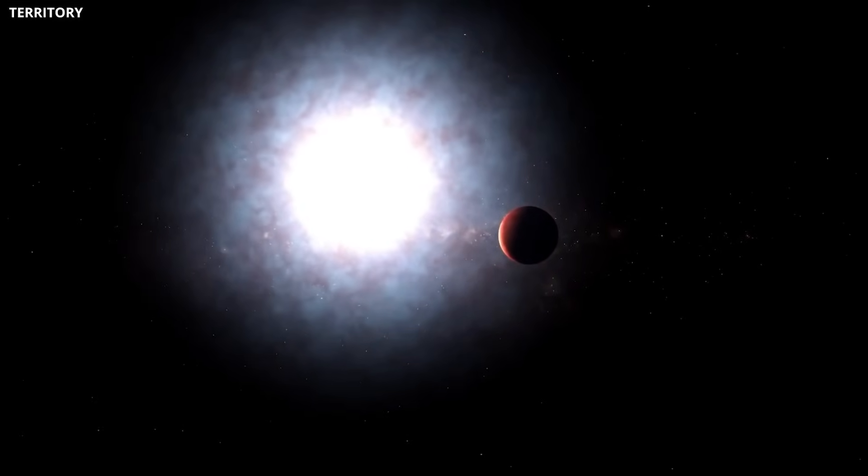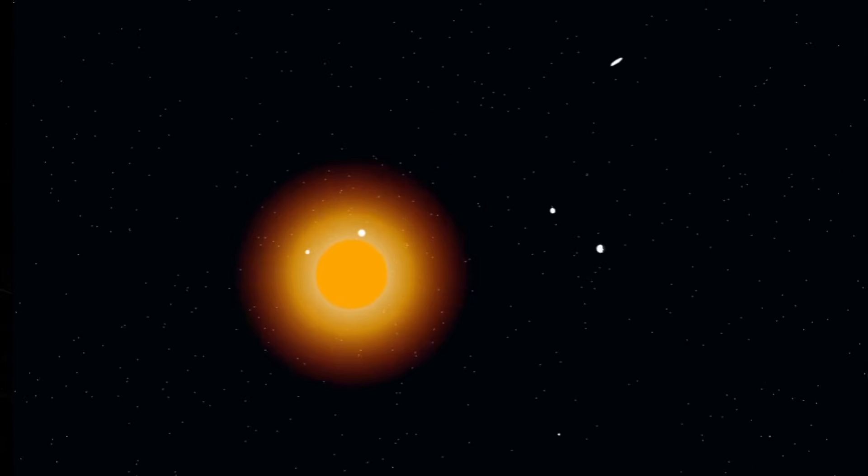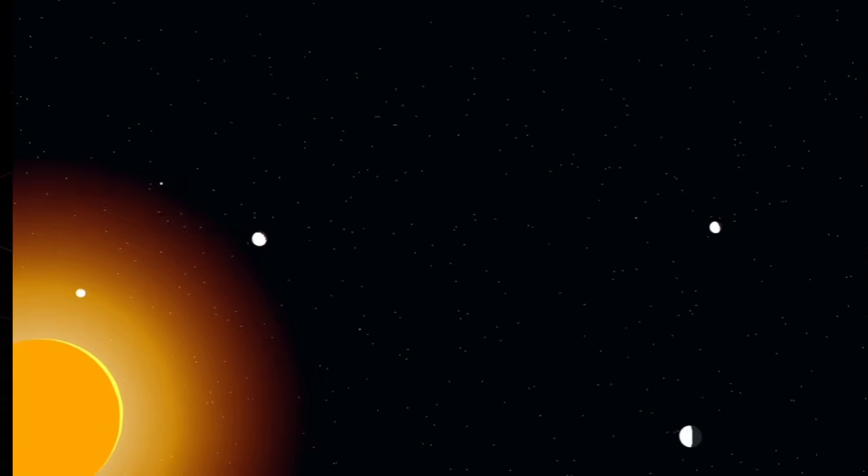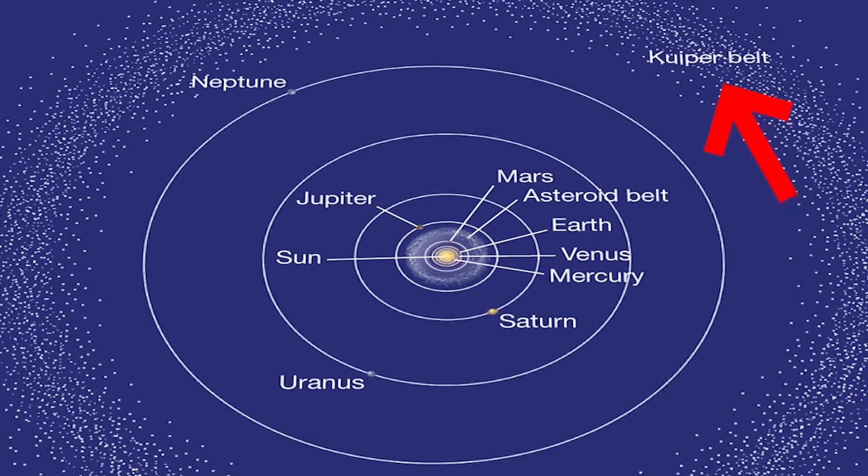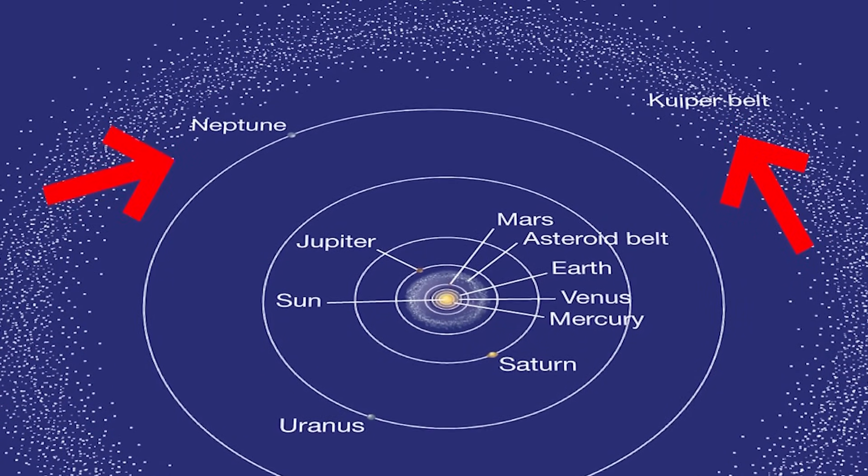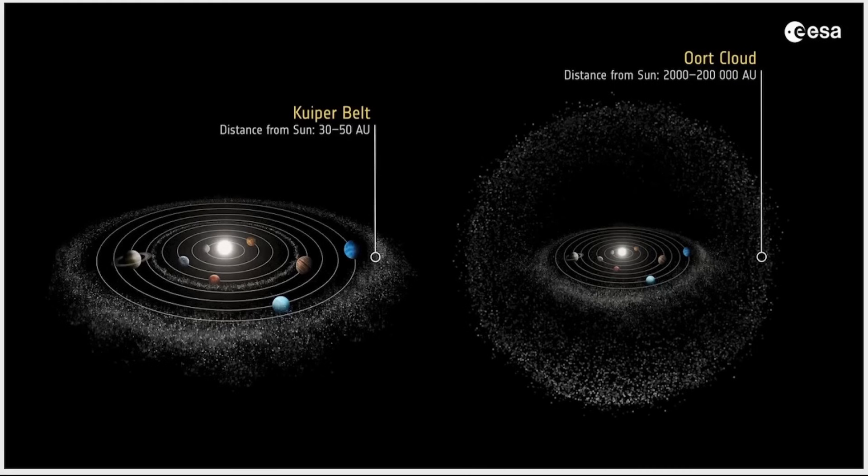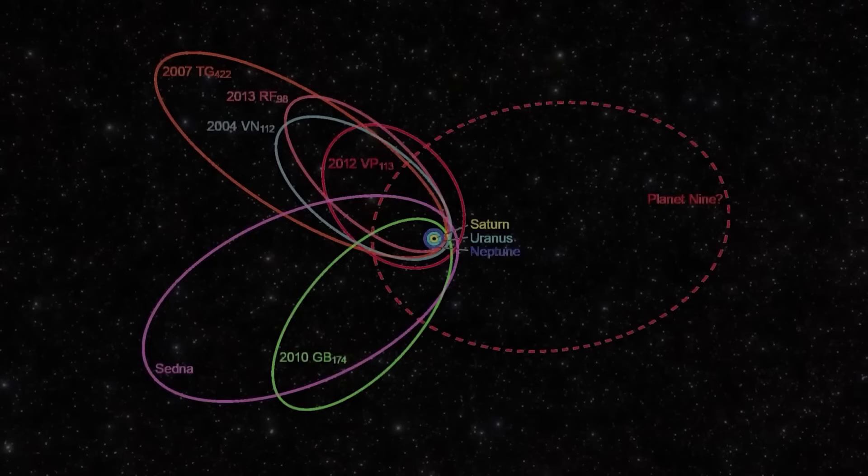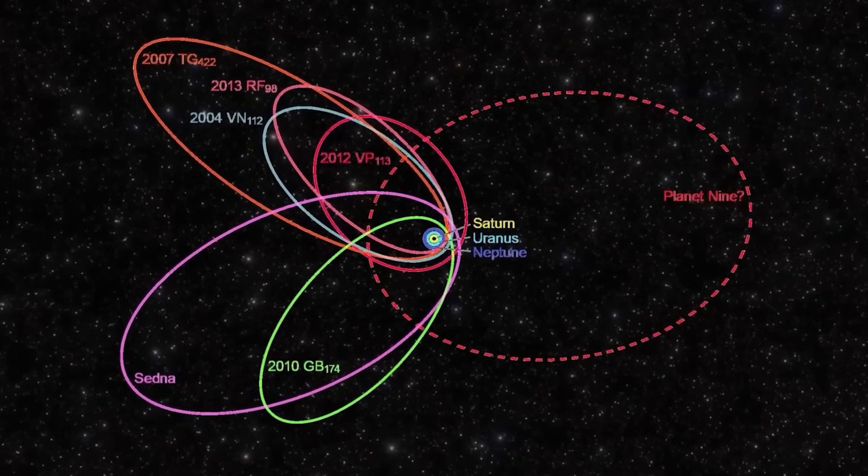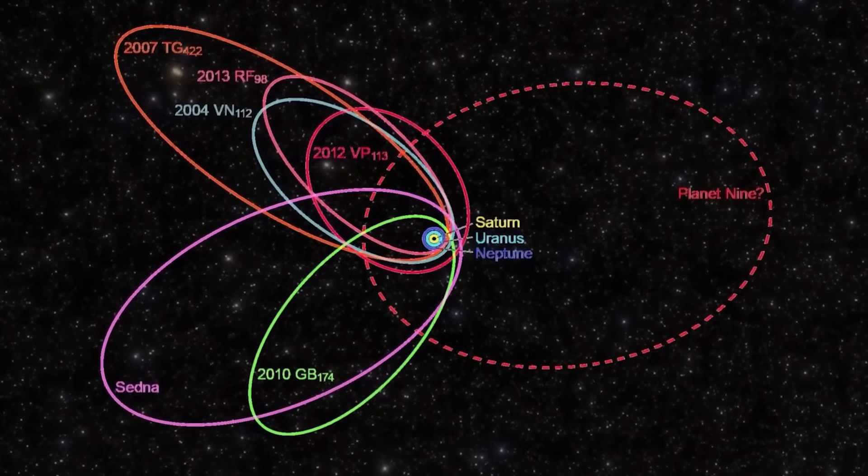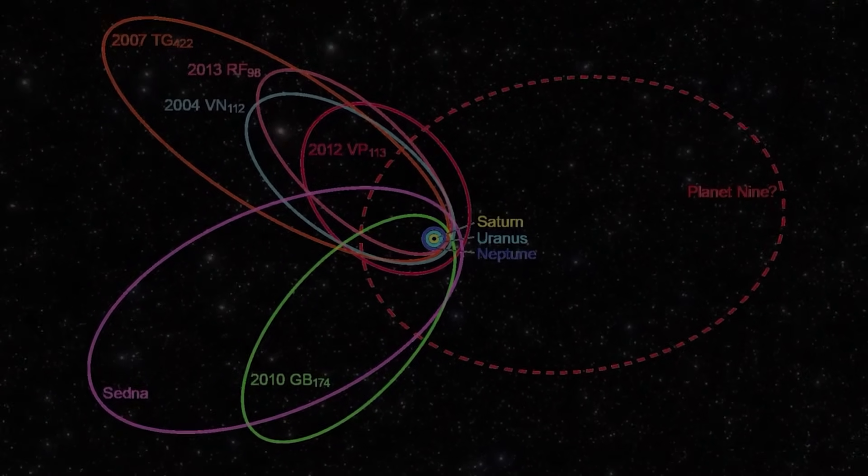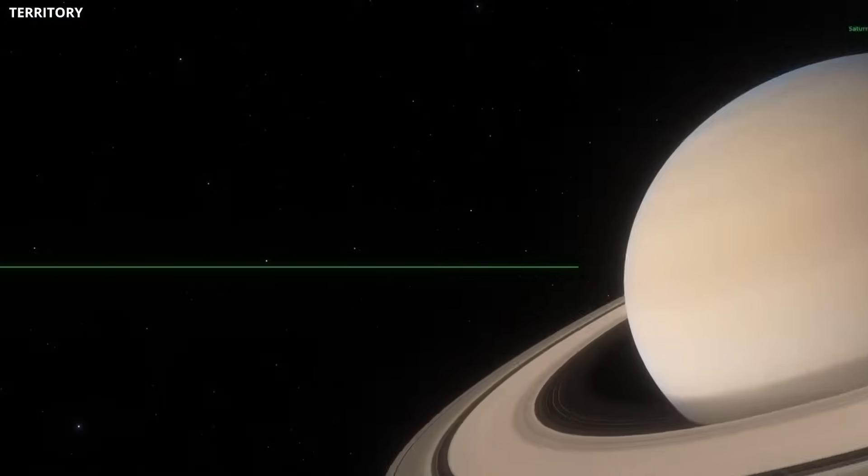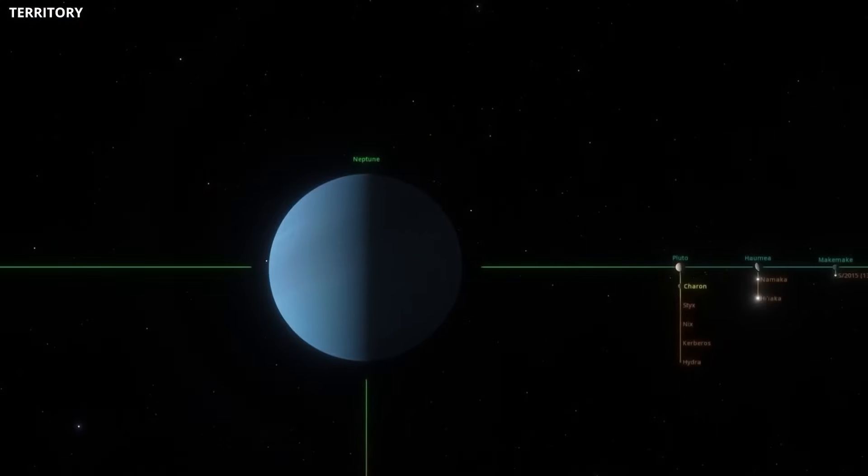One idea is that instead of one large planet, the combined gravity of many smaller objects could be shaping the outer solar system. Imagine the Kuiper belt, the ring of icy bodies beyond Neptune, was once far more massive, full of thousands of Pluto-sized worlds. Over time, their collective gravity could have nudged some objects into the strange orbits we see today. In this case, there's no hidden giant, just a swarm of icy bodies working together like an invisible team.